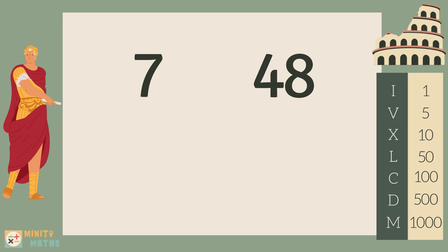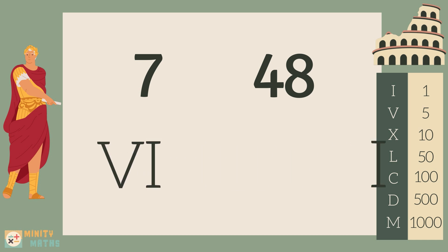Let's look at the number 7. How can we make the number 7 from the Roman numerals we have? We can add a 5 and two 1s together to make 7.